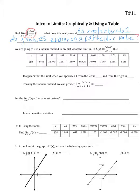For the overall limit — as you're approaching a value — if the limit as x approaches c of f(x) equals L, what must be true? That means the left-hand limit, or the limit from the left, must equal the right-hand limit.